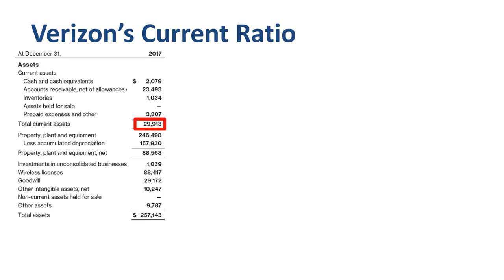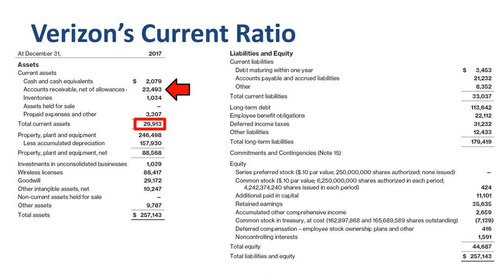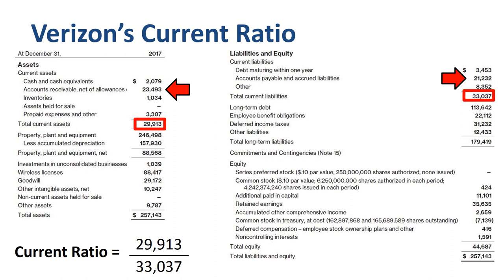Verizon: current assets of $29.9 billion on total assets of $257.1 billion — only 12% of assets are current. Most of the current assets are in accounts receivable. On the liabilities side, $33 billion of current liabilities, of which $21.2 billion is accounts payable. The current ratio is 29.9 divided by 33, which equals 0.9. Verizon spends a lot of cash on capital expenditures, dividends, and debt repayments, so the company has chosen to keep its cash balance in current assets very low, resulting in a lower current ratio.